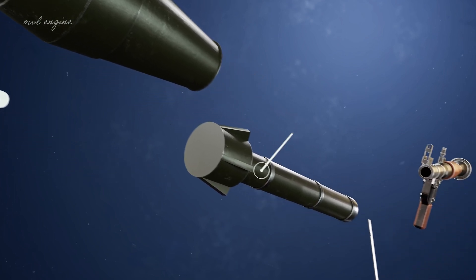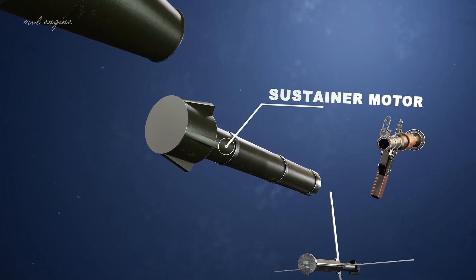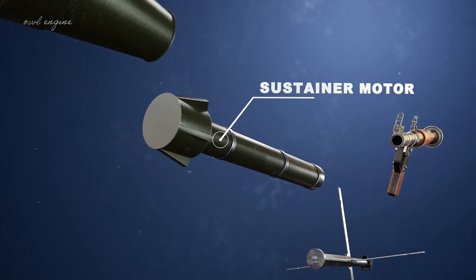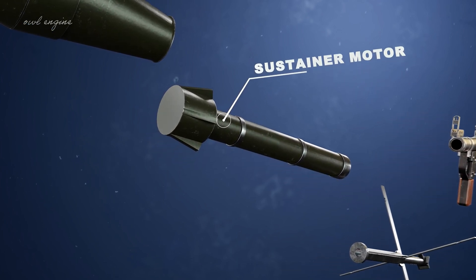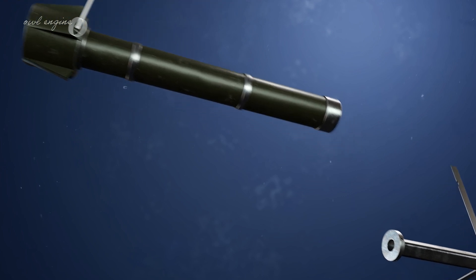This is the sustainer motor. The sustainer motor refers to the rocket motor responsible for providing continuous thrust to propel the grenade towards its target after it has been fired from the launcher tube.